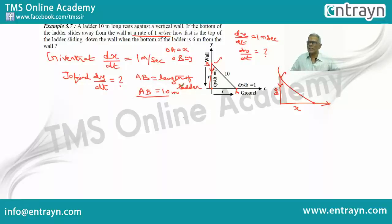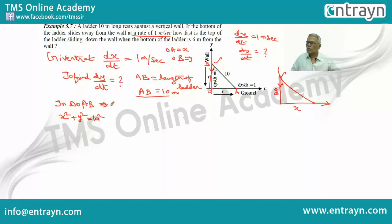In triangle OAB, by the Pythagorean theorem, OA squared plus OB squared equals AB squared, so x² + y² = 10² = 100. Now differentiate with respect to time t.